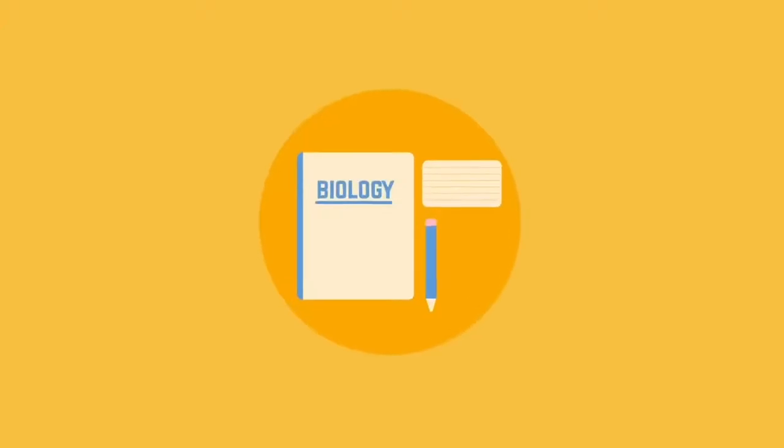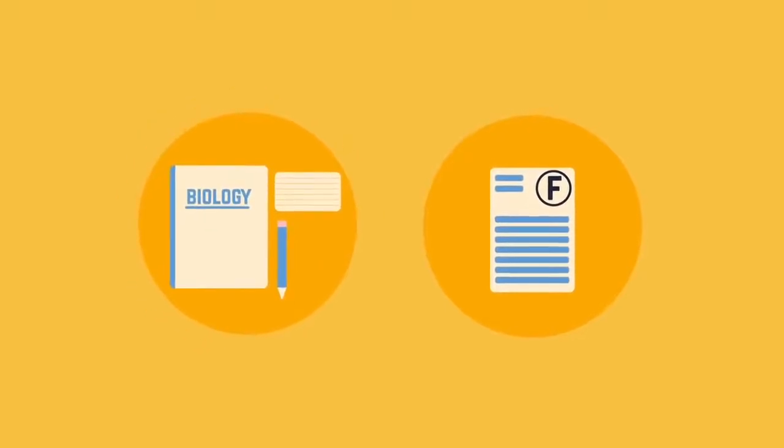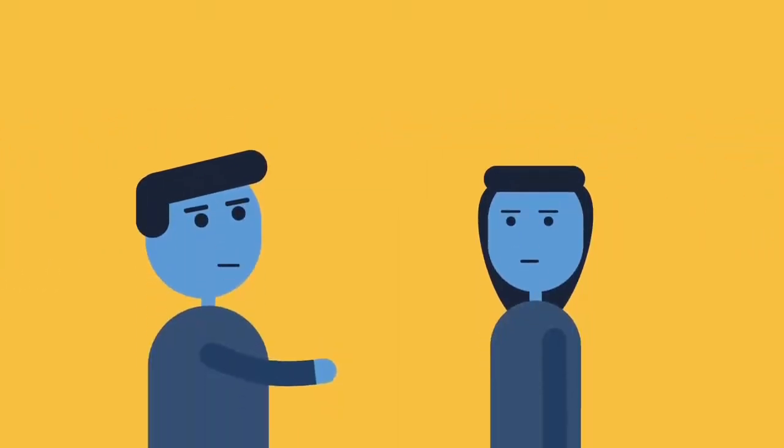The second key is to focus on process over results. Dweck has said that we should praise others for their efforts and their process rather than praising them for their results. For example, it's better to say, you studied very effectively for that test and your hard work really paid off rather than, you're so smart, you got an A.